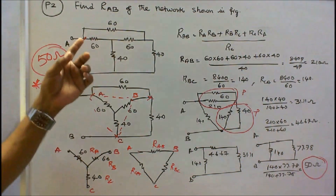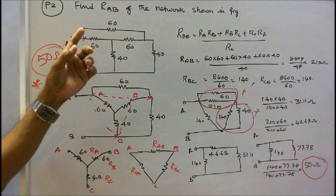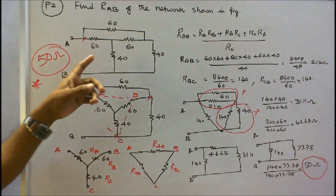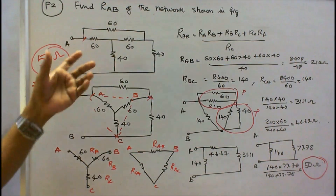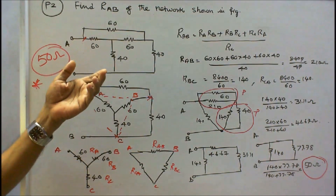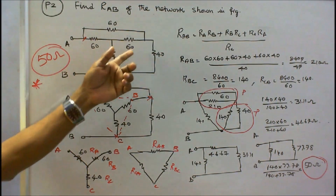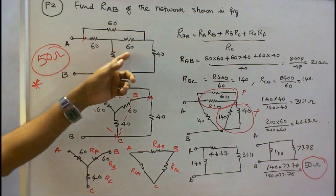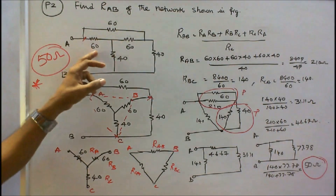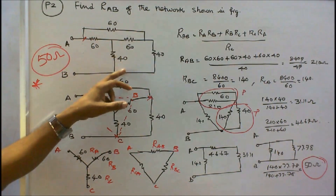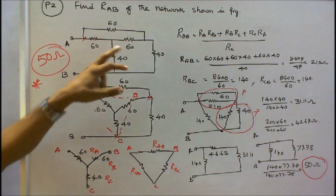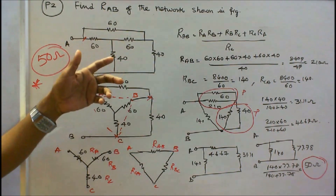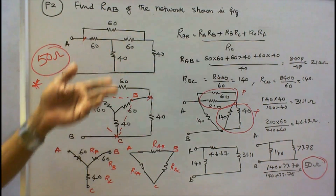Problem number 2. Find the resistance across points A and B of the network shown in the figure. The five resistors are connected as shown — 60, 60, 40, 40, and 60 ohms. There is a delta with 60, 60, 60 and a star with 60, 60, 40. Now I convert this star (60, 60, 40) into delta to more easily simplify the network.